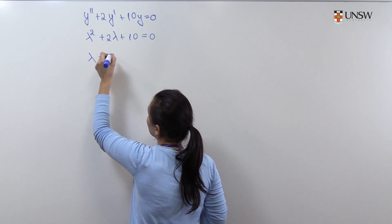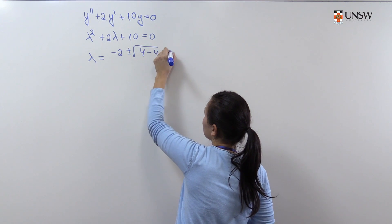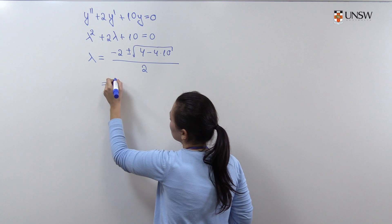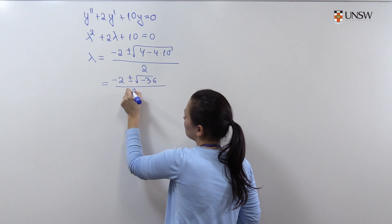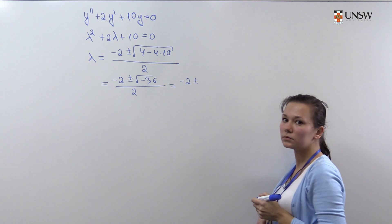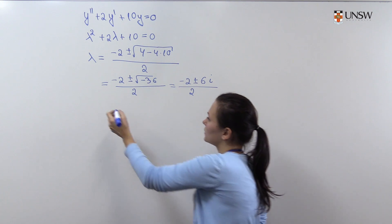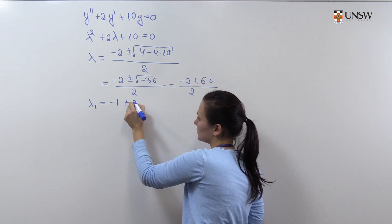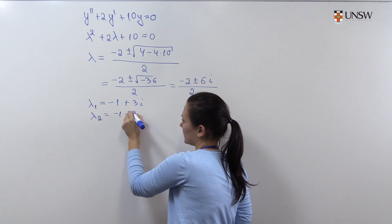Using the quadratic formula, lambda equals minus 2 plus or minus the square root of 4 minus 40, divided by 2. This simplifies to minus 2 plus or minus the square root of minus 36, divided by 2, which gives minus 2 plus or minus 6i, divided by 2. Therefore the first root is minus 1 plus 3i and the second root is minus 1 minus 3i.